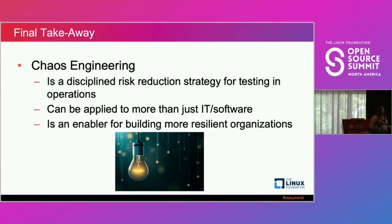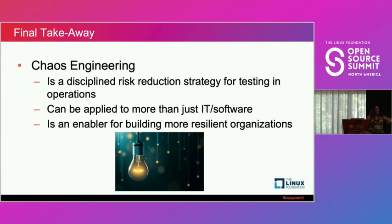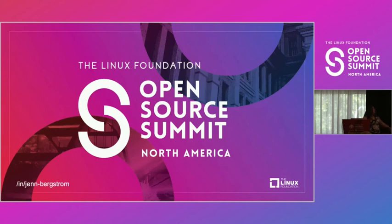Final takeaway: chaos engineering is a disciplined risk management and risk reduction strategy used for testing and operations — and those operations can go across much more than just IT and software. They can reach across your people, your processes, and your tools. It's an enabler for building more resilient organizations. Happy to stick around to answer questions in the hall, or connect with me on LinkedIn — I accept every request. Thanks for coming today.